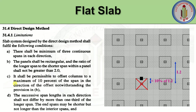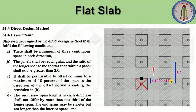The third condition is: it shall be permissible to offset a column to a maximum of 10 percent of the span in the direction of the offset. For example, if a column is moved from its center line to another position, the offset shall not be more than 10 percent of l2 — the span in the direction of the offset. So the permissible column offset is 10 percent of the span in the direction of offset.